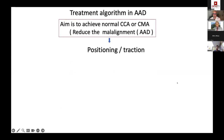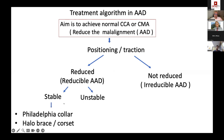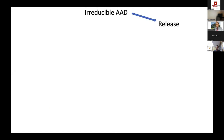The treatment algorithm for AAD: first apply traction. If it reduces — reducible AAD — assess stability. If stable, apply a Philadelphia collar, halo brace, or PARSEC; if it becomes stable on follow-up, continue conservative management. If unstable, proceed to posterior fixation and fusion — either C1-C2 fixation or occipitocervical fixation. For irreducible AAD, release tight soft tissue — as in peripheral joint surgery — to achieve reduction. Release can be done anteriorly via retropharyngeal or transoral approach, then posterior fixation and fusion.